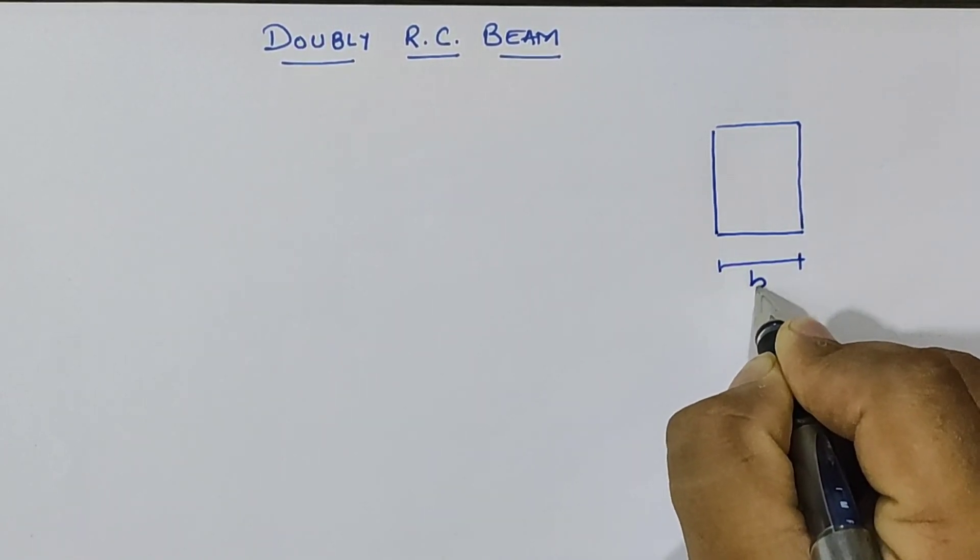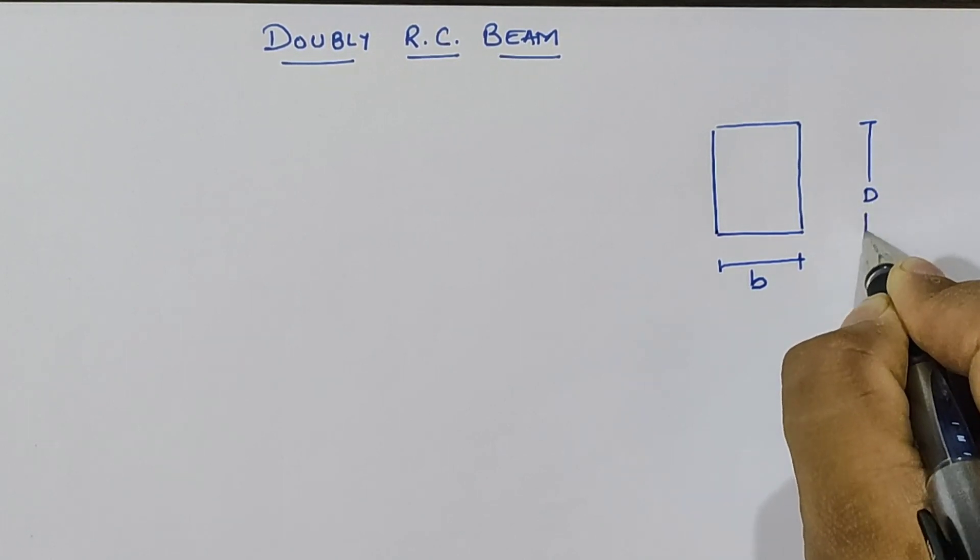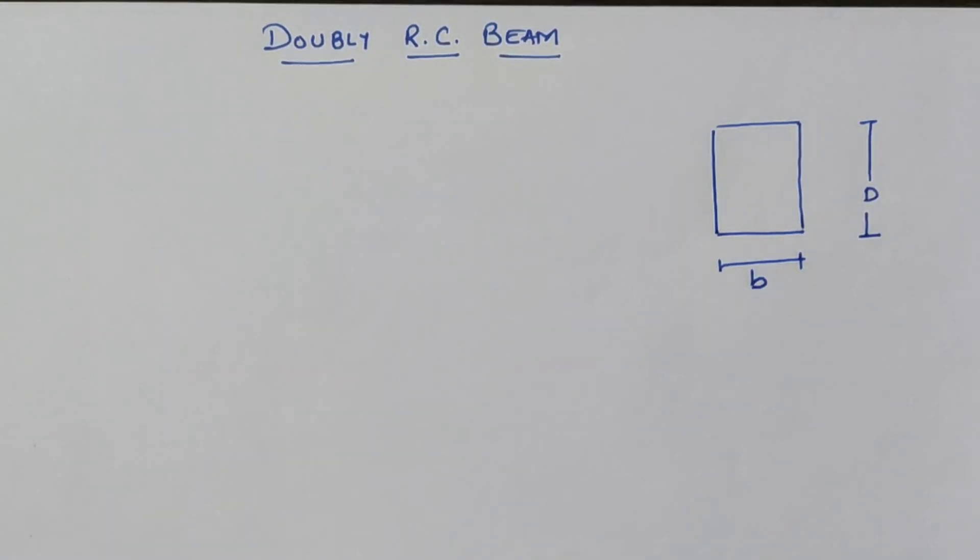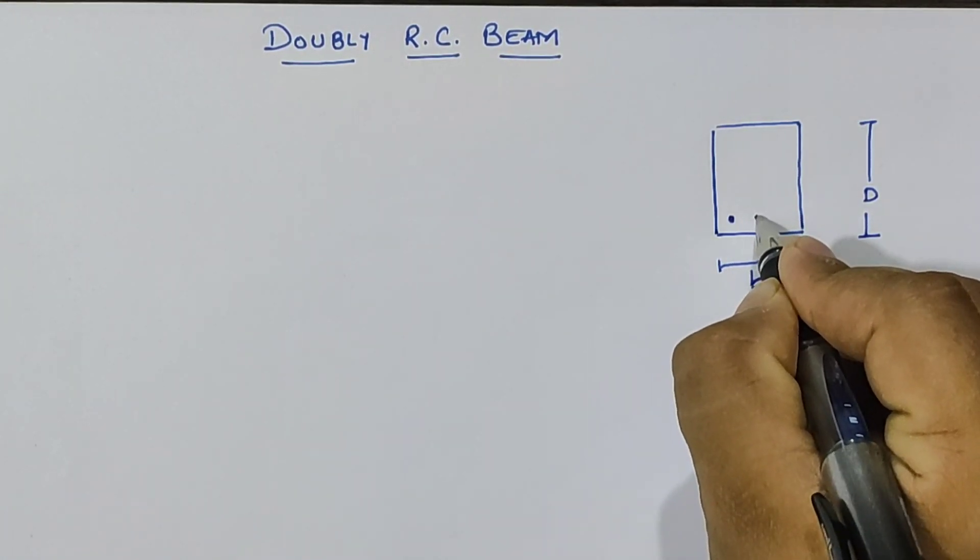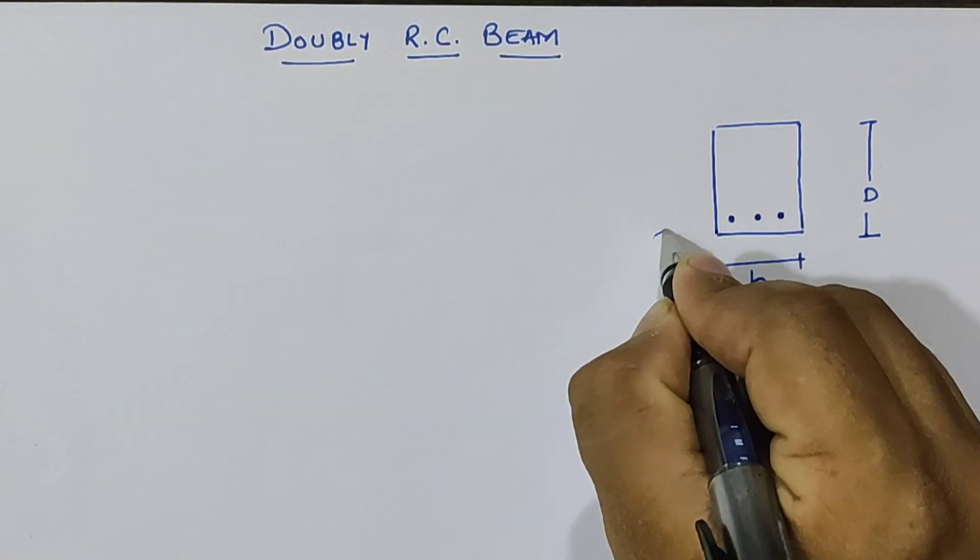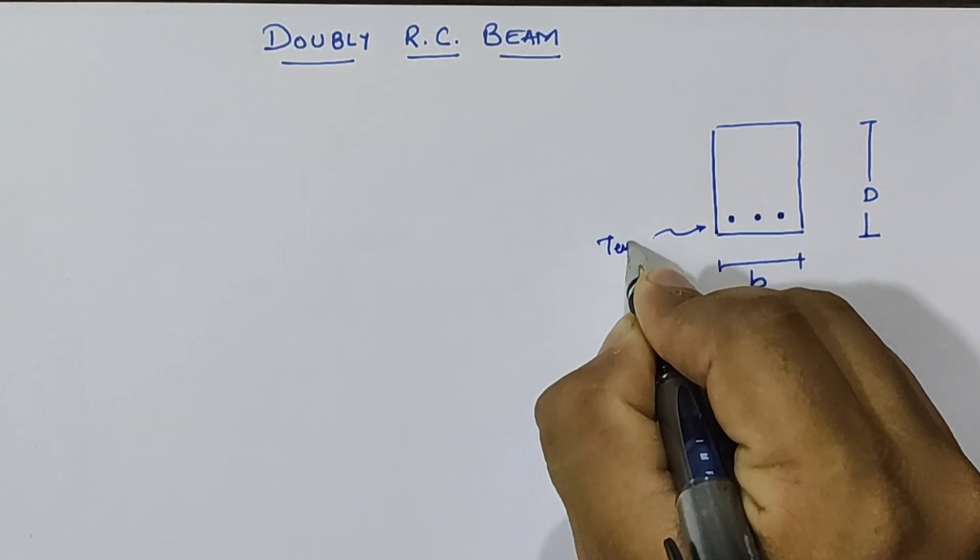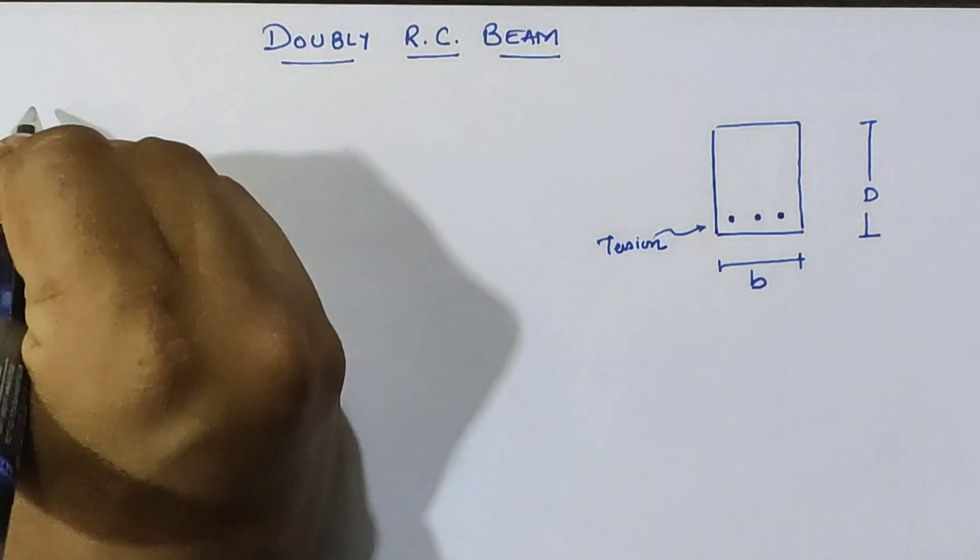If we have the cross-section of a beam with overall width as b and overall depth as D, then after analysis we provide the area of steel in the tension zone. This is known as a singly reinforced beam.